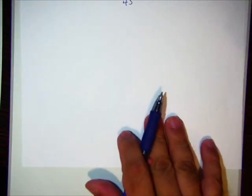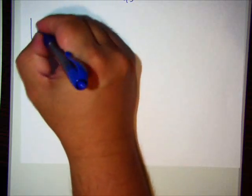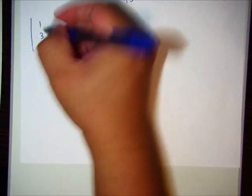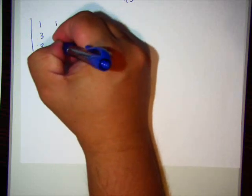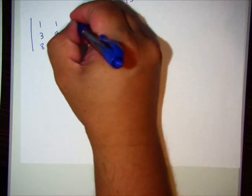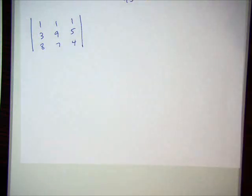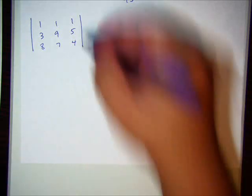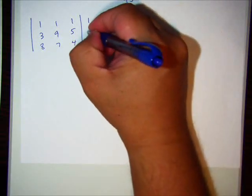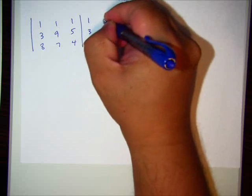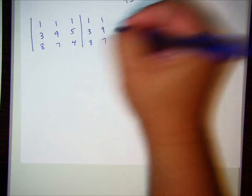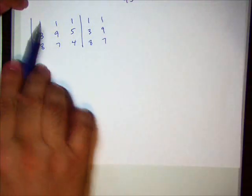All right. That's the matrix we want to find a determinant of. We're going to need to copy the first two columns. 1, 3, 8. 1, 9, 7. Then we're going to multiply diagonally.